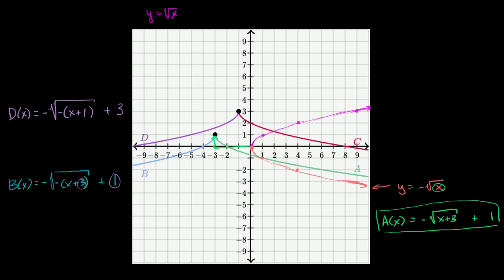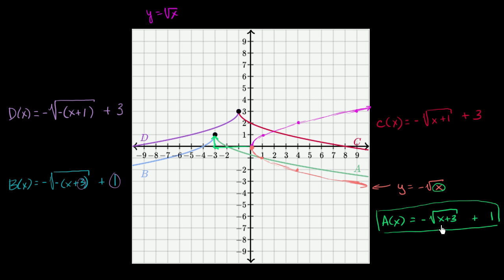And finally, c(x) is just like d(x), except everything under the radical has to have its sign flipped. So c(x) is going to be negative square root of x plus 1, plus 3. Another way to think about it: going from a(x) to c(x), they look very much the same except their shifting is different — c(x) is shifted up by 3 instead of 1, and shifted to the left by 1 instead of 3. That's why we have x plus 1 instead of x plus 3.